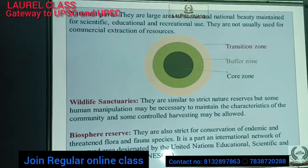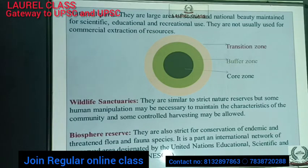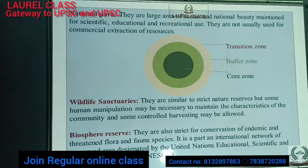Biosphere reserves are strictly conserved for endemic and threatened flora and fauna species. Endemic means species found only in that area and nowhere else. Threatened species are those which are going to vanish or become endangered. Biosphere reserves are part of an international network of preserved areas designated by the United Nations Educational, Scientific and Cultural Organization — UNESCO.